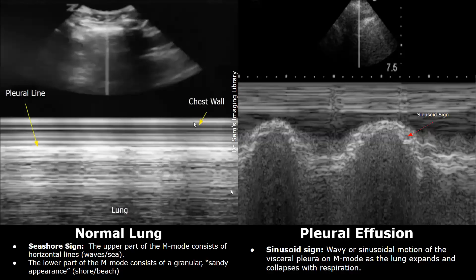This entire appearance on M-mode is called the seashore sign. In cases of pleural effusion on M-mode, we will see a sinusoid sign — a wavy or sinusoidal motion of the visceral pleura is seen as the lung expands and collapses with respiration. You will see this wave on the M-mode of a lung with pleural effusion. This sign is helpful in diagnosing pleural effusion on ultrasound.